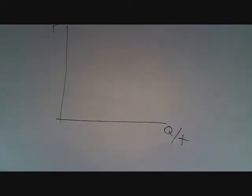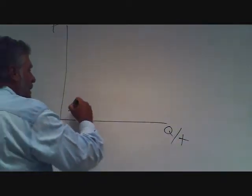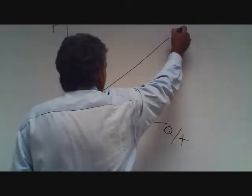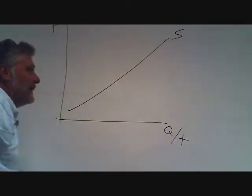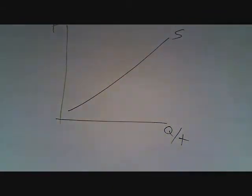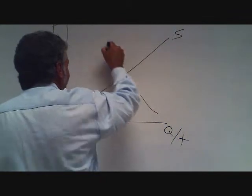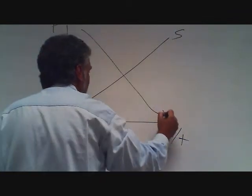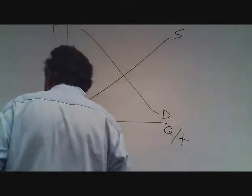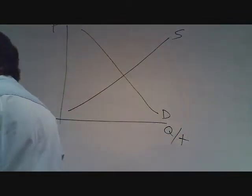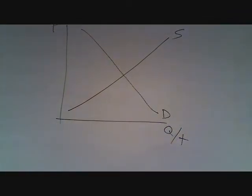The higher the price, the more chocolate firms will want to sell, so the supply curve has a positive slope. The higher the price, the less chocolate people will want to buy, so the demand curve has a negative slope.